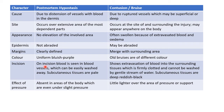Now let us see about the incision test. On incision, blood is seen in blood vessels in case of hypostasis and it can be easily washed away; the subcutaneous tissues are pale. In case of bruise, on incision we may find extravasculation of blood into the surrounding tissues which is firmly clotted and cannot be washed away by a gentle stream of water. In case of bruise the subcutaneous tissues are deep reddish black, whereas in case of hypostasis the subcutaneous tissues are pale.